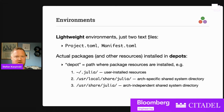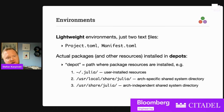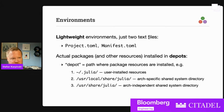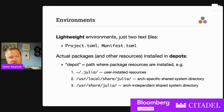The actual packages and other resources are installed in what we call depots. A depot is really just a path where package resources are installed. The three default ones are: user-installed resources in your home directory (~/.julia), an arch-specific shared system directory, and an arch-independent shared system directory. A lot of people don't use these on personal systems — they're really more designed for shared systems where a system administrator wants to make pre-installed packages and binaries available for people.